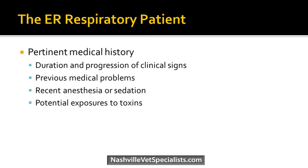When looking at a patient presenting in respiratory distress on ER, after they're stabilized, things to keep in mind in the history include how long the problem has been going on, was it acute, does the dog have a history of coughing, previous medical problems, any medications the pet is on, any recent anesthesia or sedation, and any potential exposure to toxins.